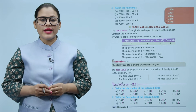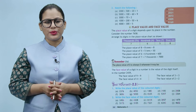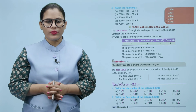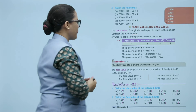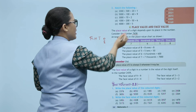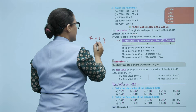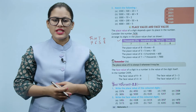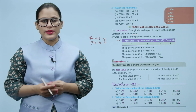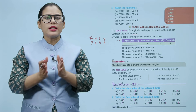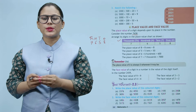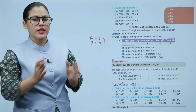Place value and face value. The place value of a digit depends upon its place in the number. Consider the number seven thousand six hundred fifty eight. Arrange its digits in the place value chart. Ones place pe hai eight, tens place pe hai five, hundreds place pe hai six, and thousands place pe hai seven. The place value of eight equals eight. The place value of five equals fifty. The place value of six equals six hundred. The place value of seven equals seven thousand.